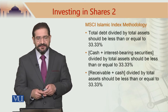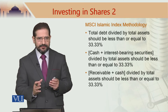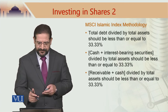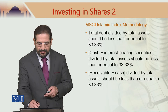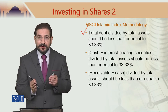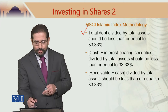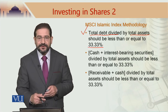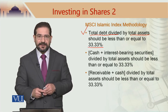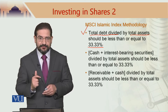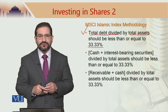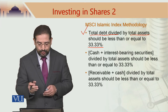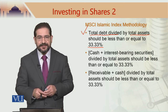Let us go to MSCI Islamic Index methodology. All these methodologies seem similar, with some minor differences between them. In the case of MSCI Islamic methodology, MSCI has got two methodologies. Total debt divided by total assets should be less than or equal to 33.33%. Remember, in the case of S&P Dow Jones methodology, the denominator in the ratios was market capitalization. In this case, it says total debt divided by total assets should not exceed one-third.